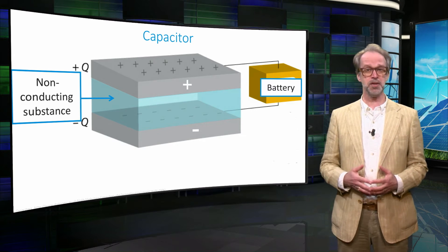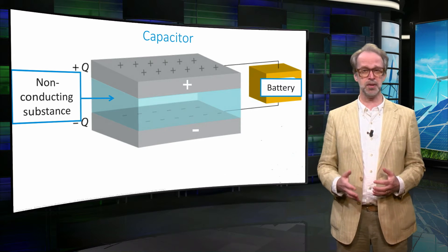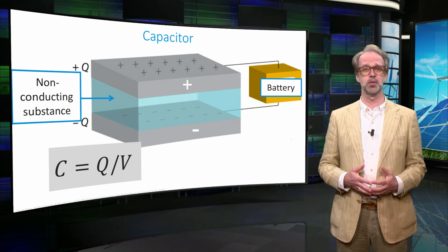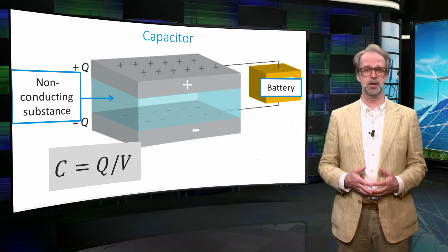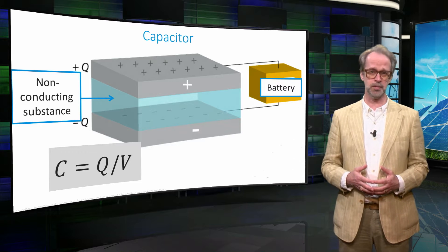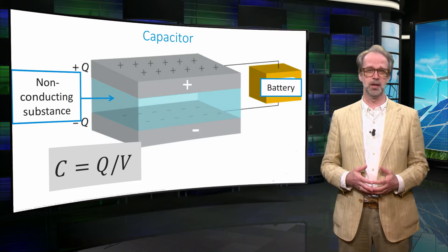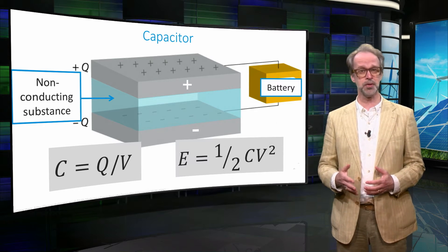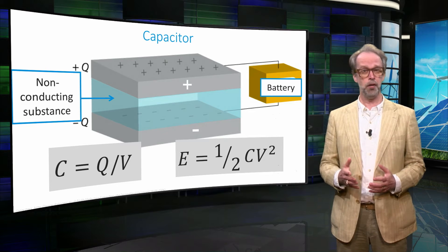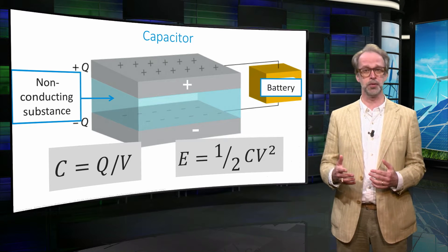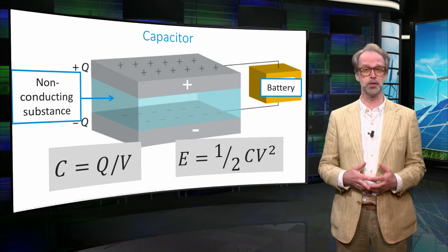A capacitor is characterized by the capacitance — that is the amount of charge stored on the plates divided by the potential difference between the plates. The amount of energy stored in a capacitor equals one half times the capacitance times the voltage squared, according to this formula.